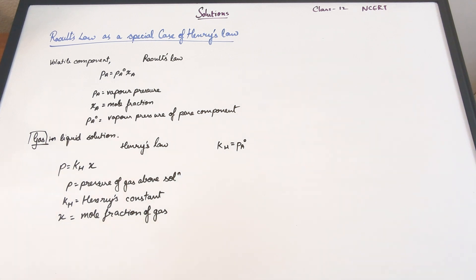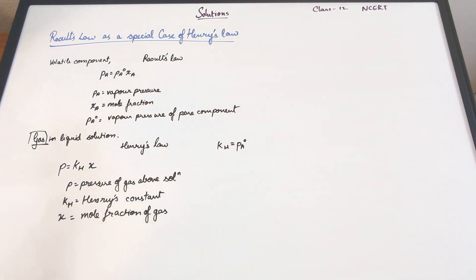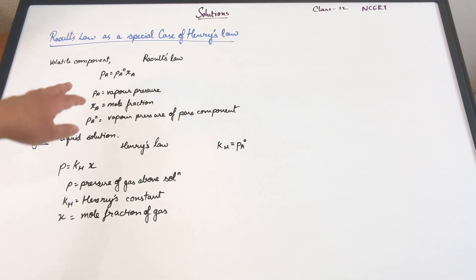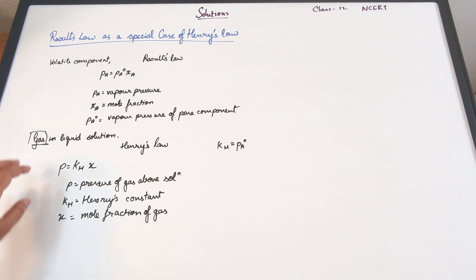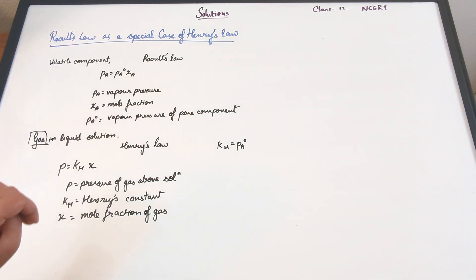Basically what we're trying to say is that Raoult's law is a special case of Henry's law because if you remove the proportionality constant, essentially the pressure is directly proportional to the mole fraction. The only difference is that here we're considering gases and here we're considering volatile liquids. If you have a gas and a liquid where the liquid is slightly volatile, and the gas follows Henry's law, then the liquid will follow Raoult's law. With that we're done with Raoult's law as a special case of Henry's law. In the next video we will be discussing the vapor pressure of solutions with solids in liquids.